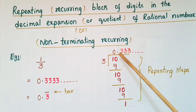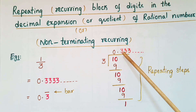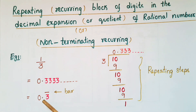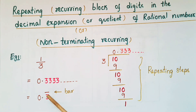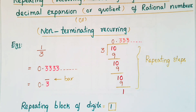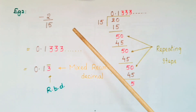Divide 1 by 3 and you will get a quotient of 0.333, and so on. Here the remainder 1 is repeating every time, so the digit 3 is repeating in the quotient. We can write 1/3 as 0.3 bar. The digits under the bar — here only one digit — are called the repeating block of digits, so the repeating block of digits is equal to 1.